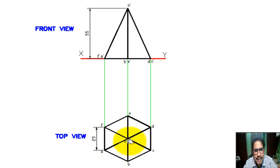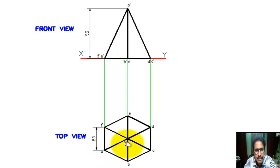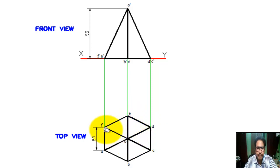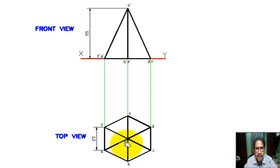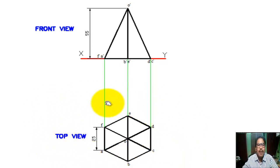Now we find the center by bisecting the angles. Lines intersect at point O. We join O-A, O-B, O-C, O-D, O-E, and O-F. O is the center of the hexagon and O is the vertex of the hexagonal pyramid. This is the top view. Now we draw the front view.